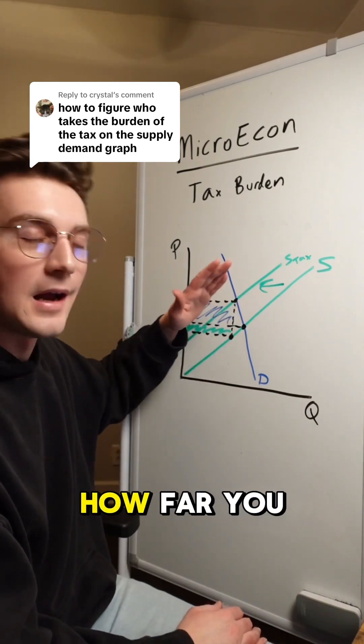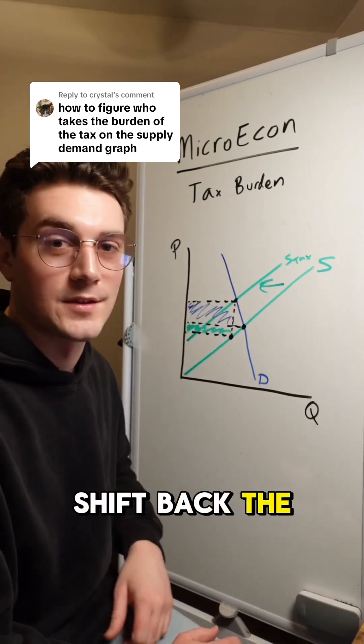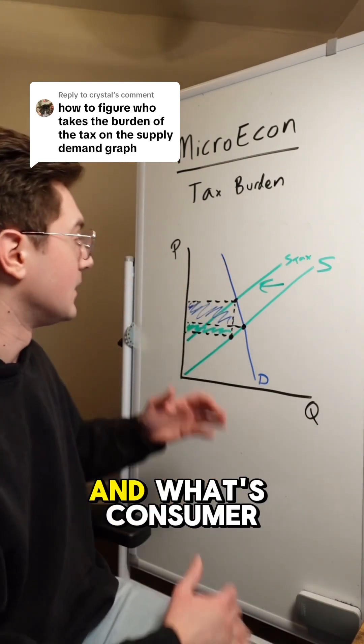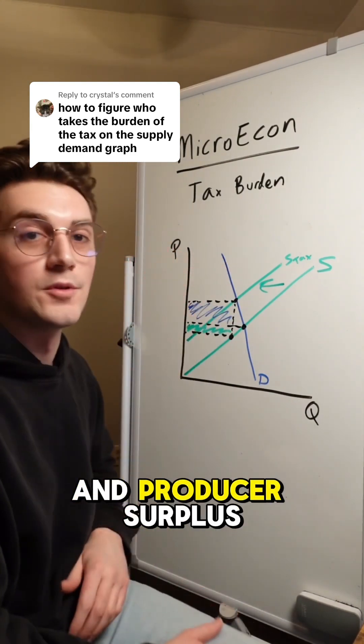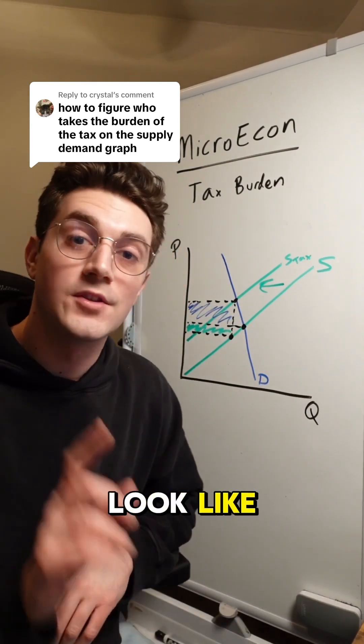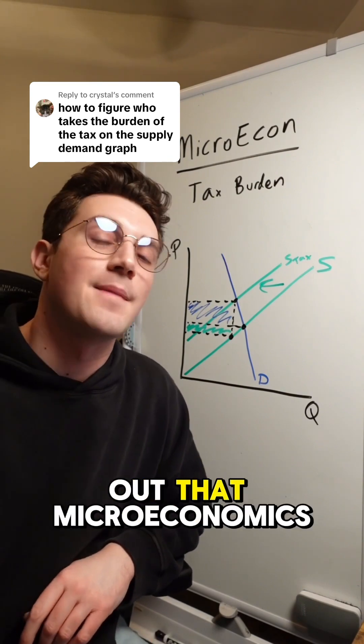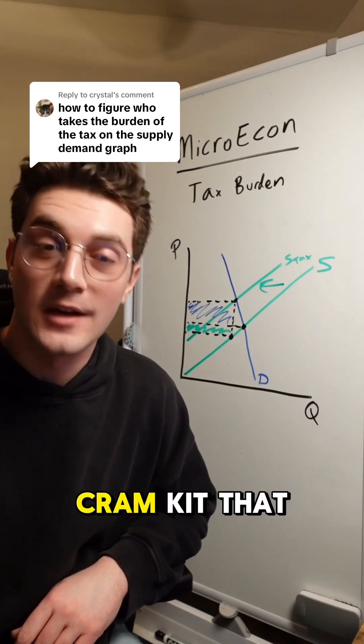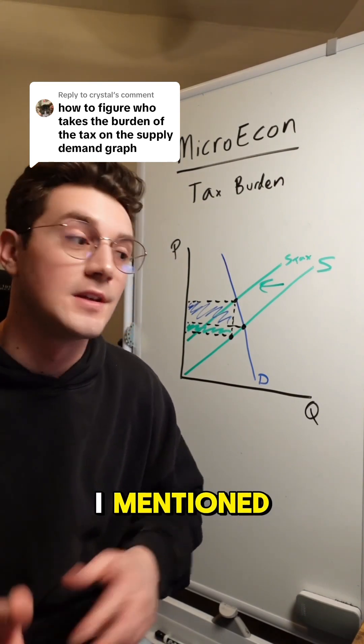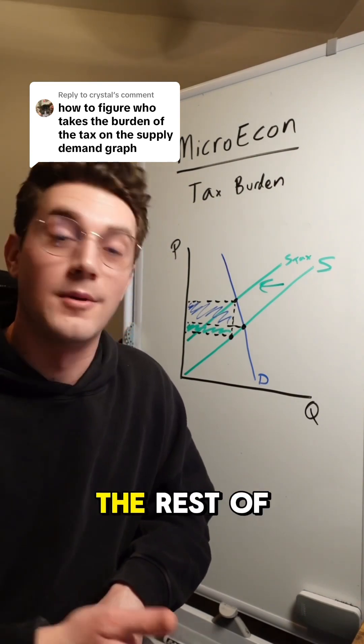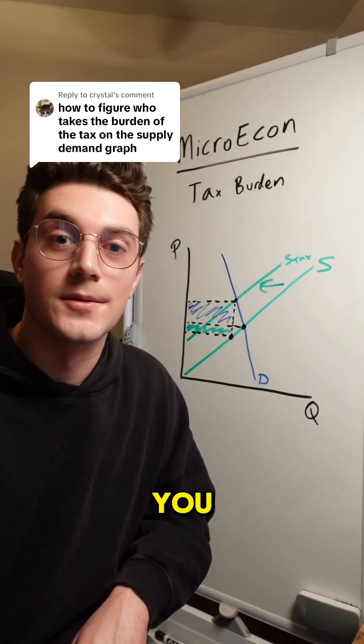That's it for tax burden. There are some other elements we didn't touch on, like how to know how far you shift back the supply curve and what consumer and producer surplus look like. Go check out that microeconomics cram kit if you want me to explain the rest of this class to you.